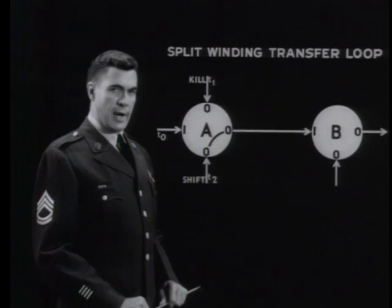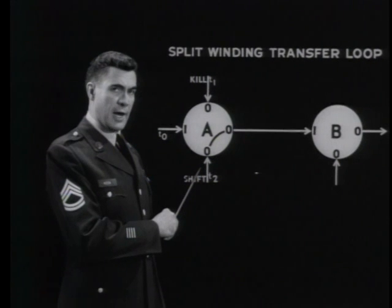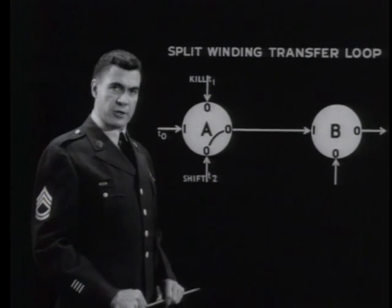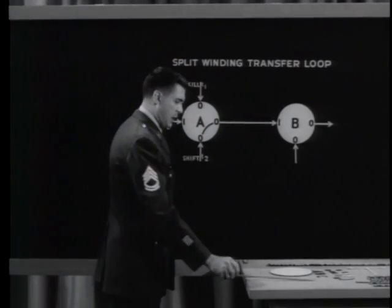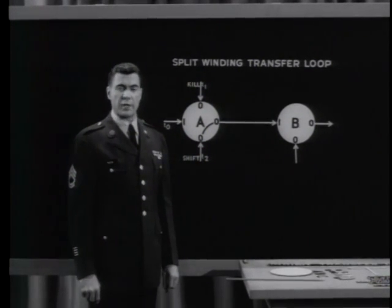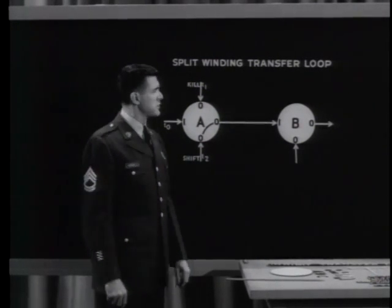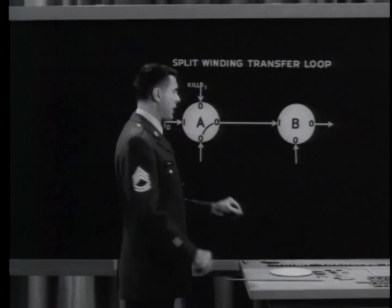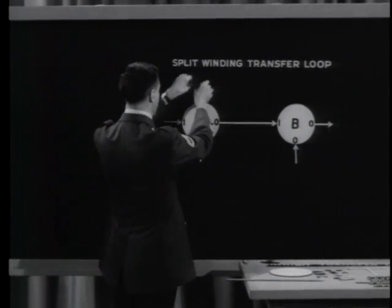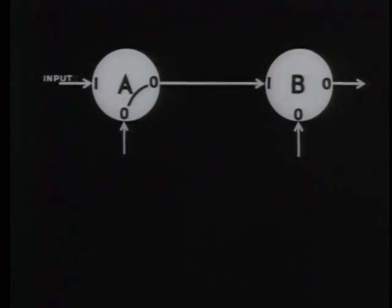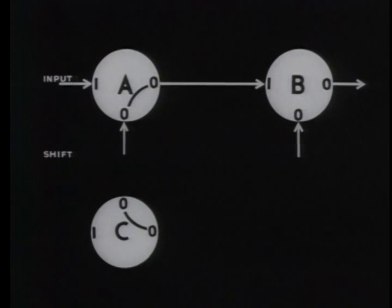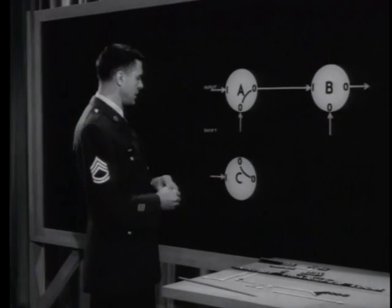Incidentally, to illustrate the split winding, the shift arrow is placed at core A in the logical diagram and not at core B, because this shows its function: to clear core A back to zero and at the same time put a one in B. The third transfer loop — the inhibit transfer loop — is really a variation of the split winding transfer loop. It offers the same kind of isolation between the sending and receiving cores, plus an additional means of control over the transfer. We'll need only two inputs to core A: the input pulse that switches core A to binary one, and the shift pulse. But we'll be using three cores.